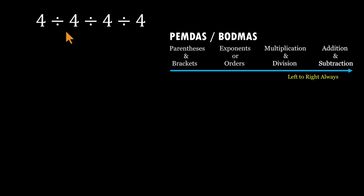Start from the left. Four divided by four equals one. Carry everything else forward. Now we have one divided by four divided by four.